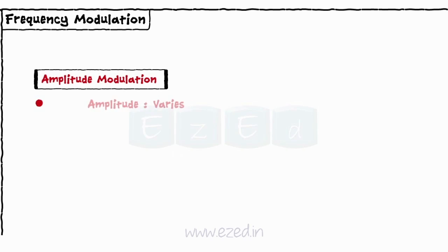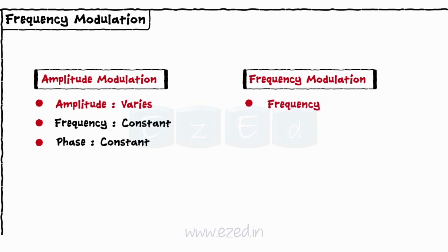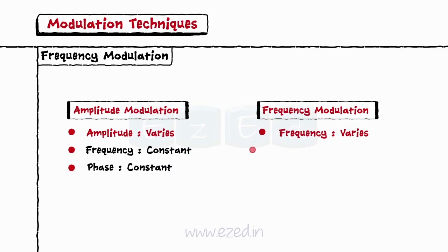In amplitude modulation, the amplitude of the carrier changes, and the frequency and the phase remains constant. In frequency modulation, the frequency of the carrier signal varies, whereas the amplitude and the phase remains constant.